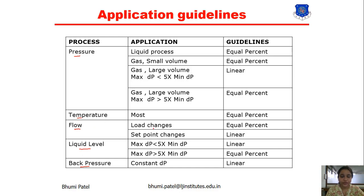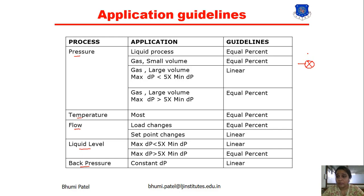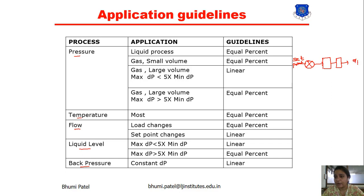For flow, we have two applications: load changes and set point changes. The set point is the input to the system — after the input, we connect a summing point, and after the summing point we get the output. So the input works as the set point of the system. If we change the set point, we may not get the proper or desired output, so we change the set point of the system.